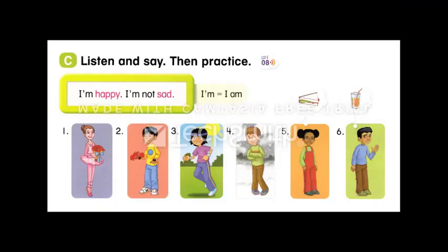Page 5. C. Listen and say, then practice. I'm happy. I'm not sad. I'm — I am. 1. I'm happy. I'm not sad. 2. I'm sad. I'm not happy. 3. I'm hot. I'm not cold.